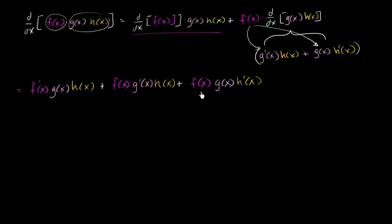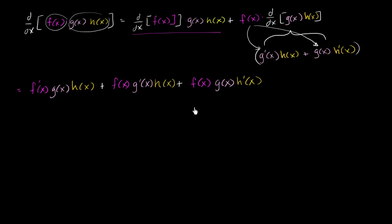This is a pretty neat result. We can view this as a product rule where our expression is viewed as a product of three functions, and we have three terms. In each of these terms, we take the derivative of one of the functions and not the other two — here we took the derivative of f, here of g, here of h. And you can imagine, if you had the product of four functions, you'd have four terms. If you had n functions, you would have n terms, and in each of them you would take the derivative of one of the functions.